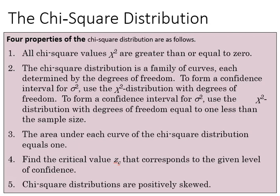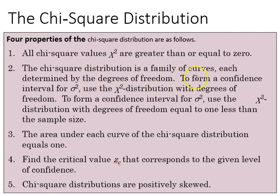The chi-square distribution has four properties. The first is that all chi-square values are greater than or equal to zero, so it's not like the t or z-scores where we have negatives. The chi-square distribution is a family of curves, much like the t-distribution, all determined by degrees of freedom.